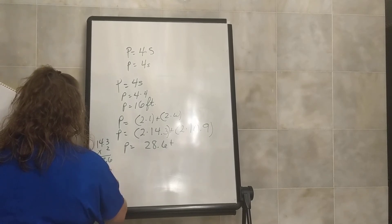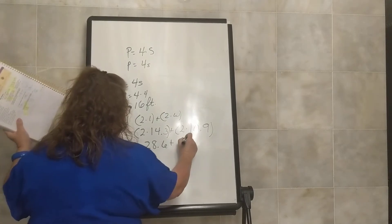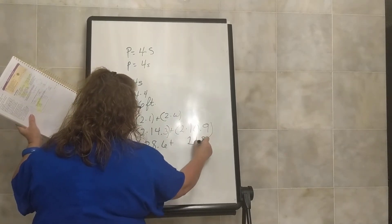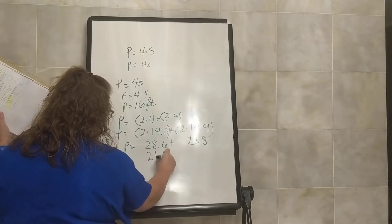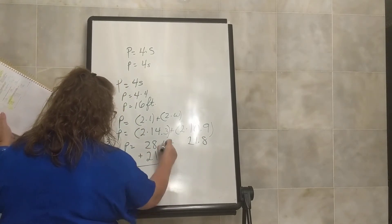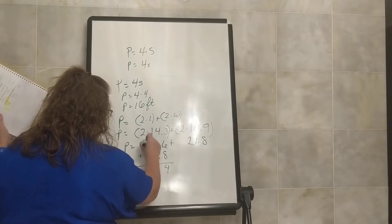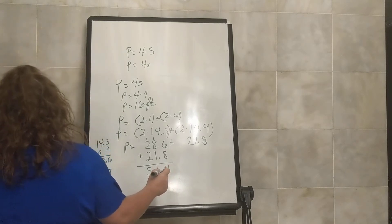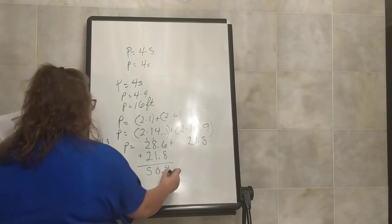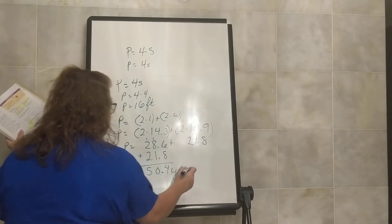9 times 2 is 18 — put 8 down, carry the 1 — giving us 21.8. So perimeter equals 28.6 plus 21.8. Adding those up: 6 and 8 is 14, carry the 1, and our perimeter equals 50.4 yards.